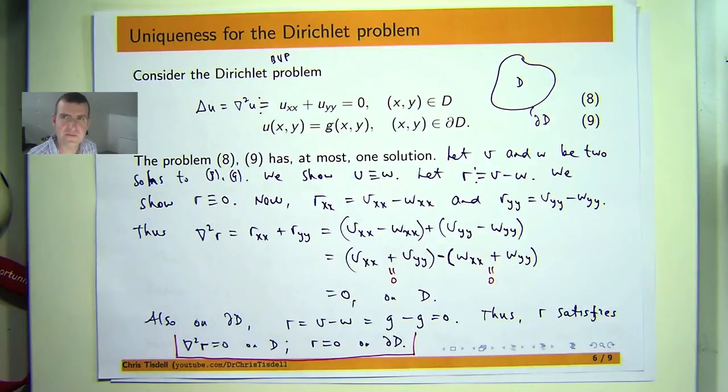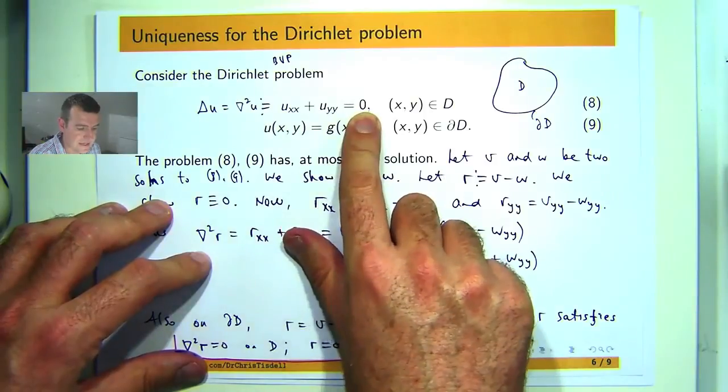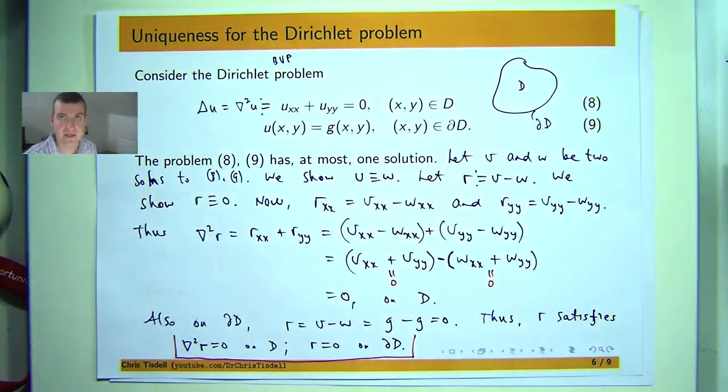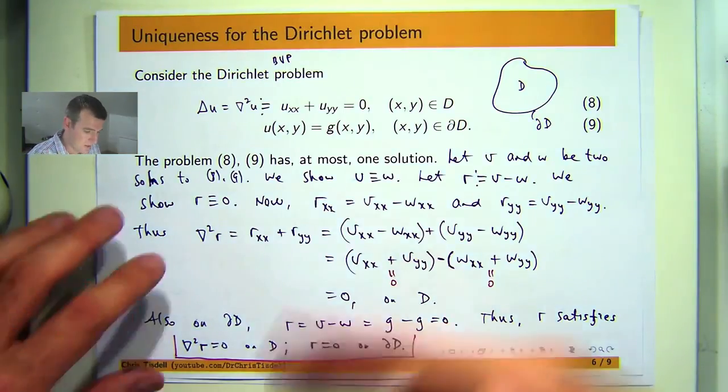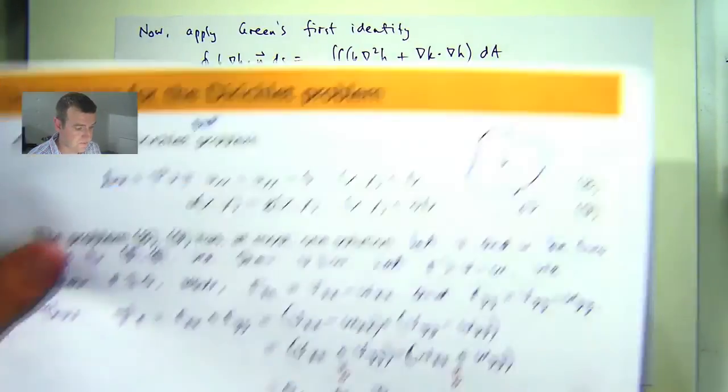Now, a little bit of generalization. You don't need to have a 0 on the right-hand side. You can have, say, a f of x comma y, Poisson's equation, and you can rerun the proof. And a good exercise might be to work through it and show that the result is still valid.